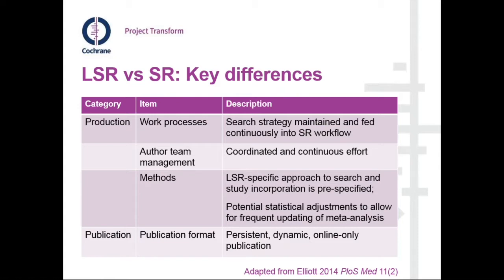Publication of living systematic reviews is quite tricky. It needs to be an online-only format, whether that's journals or websites, with the manuscript itself being dynamic — able to be updated and changed over time. Cochrane is actually very well placed to publish living systematic reviews because we already publish updates, but many other journal publishers don't have that model, so it's quite a big shift in thinking about how we get these published.